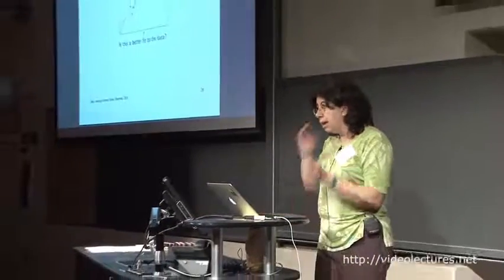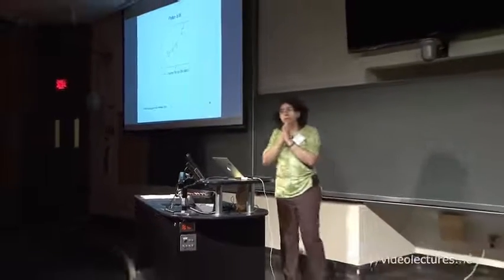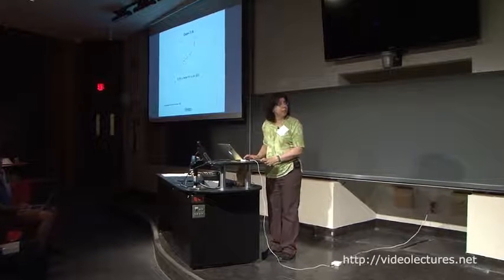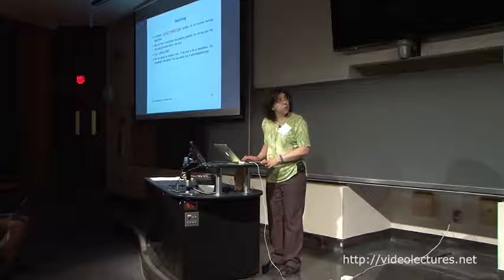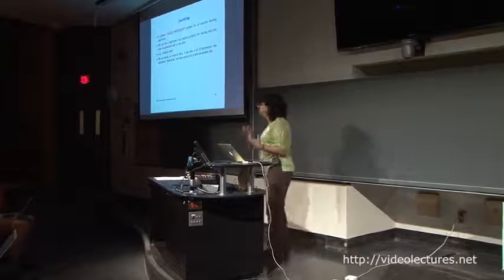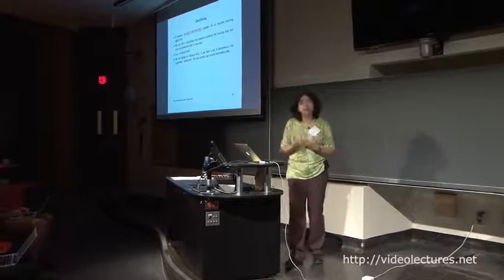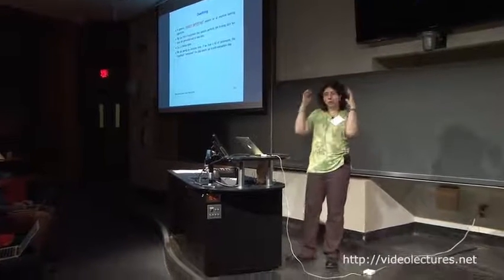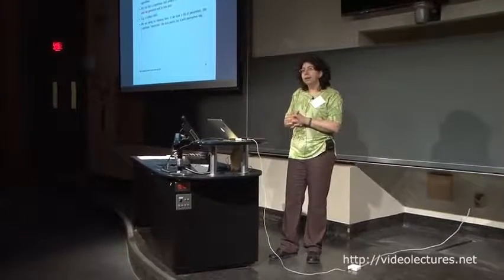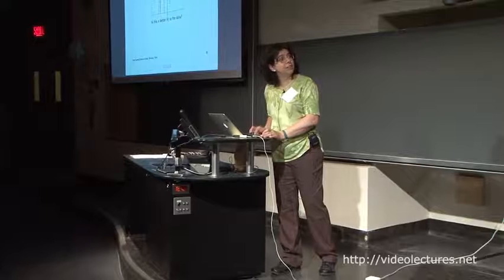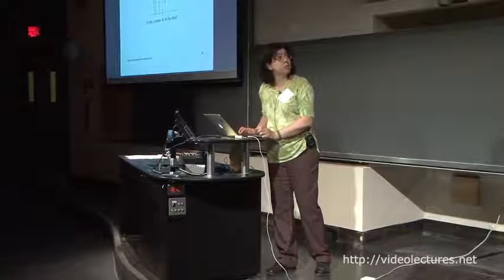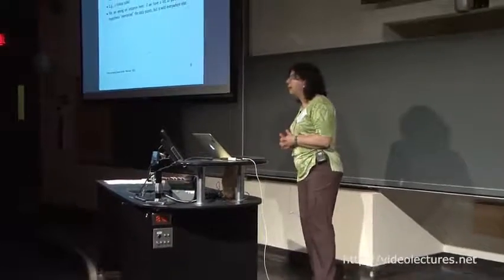This points to a problem — a mismatch between what we would like to measure in the optimization objective and what we can actually measure. What we would like to do is measure the true error on the whole distribution of data, but we don't have access to that. We only have access to a finite sample. As a result, if all we do is train and test on the same sample, we're going to run into trouble. We essentially get solutions that fit the training data perfectly but are not good hypotheses that generalize well. This is a really important problem in all of machine learning called overfitting.